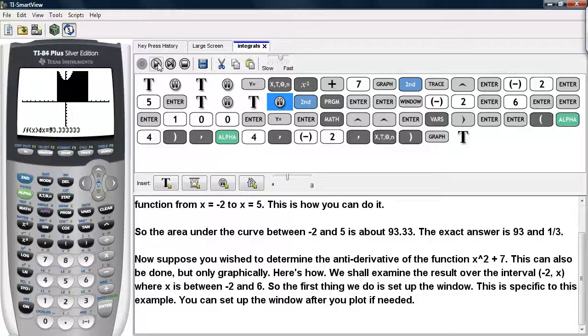Now suppose you wish to determine the anti-derivative of the function x squared plus 7. This can also be done, but only graphically. Here's how. We shall examine the result over the interval negative 2 to x, where x is between negative 2 and 6. So the first thing we do is set up the window. This is specific to this example. You can set up the window after you plot as needed.